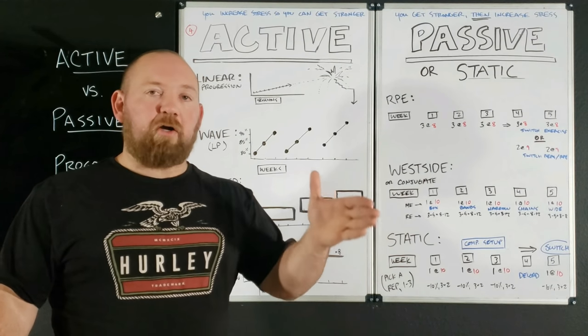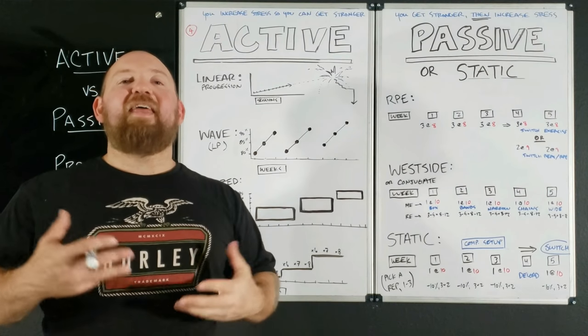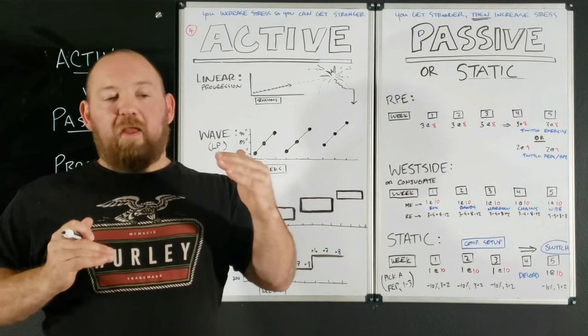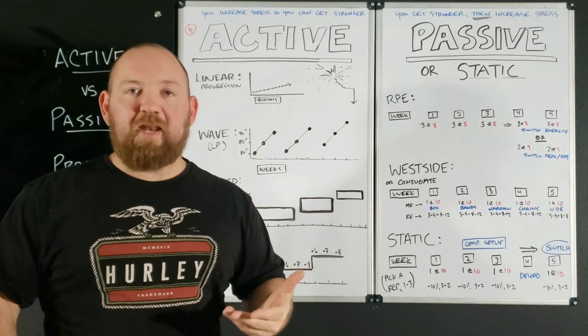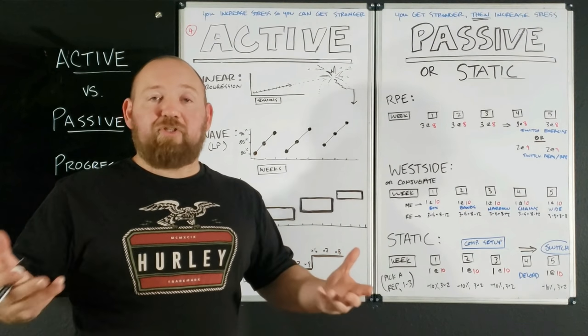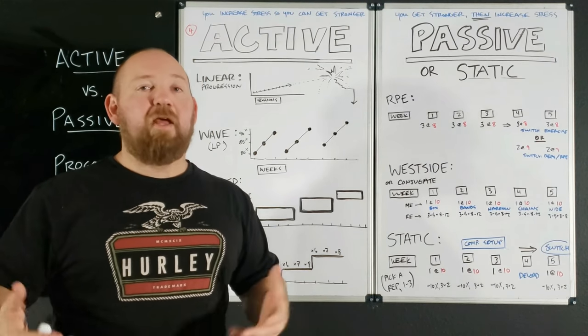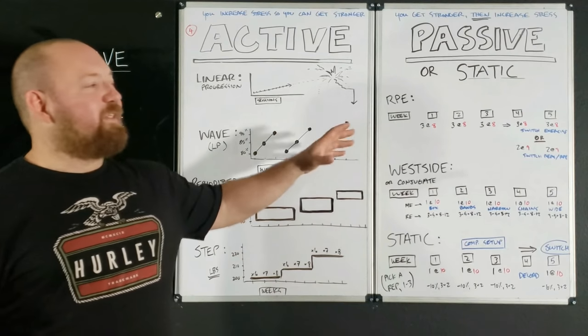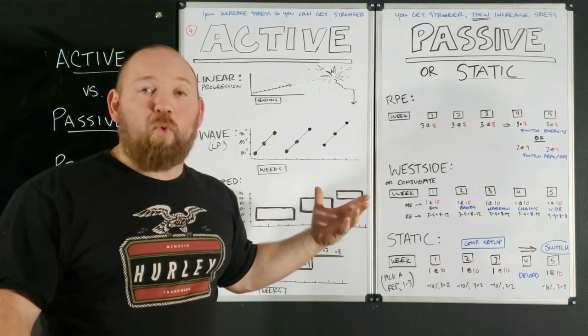So if you find that you get stronger over four weeks, but then week five, you backslide, that tells you where the under-recovery is overtaking whatever benefit you're getting from the training. And that's how you're going to structure your blocks, or that's how you're going to time your peaks for a meet. So it's really useful to know that. This allows you to control for more things, because there's less noise, and it seems to work. So that's pretty cool, right?